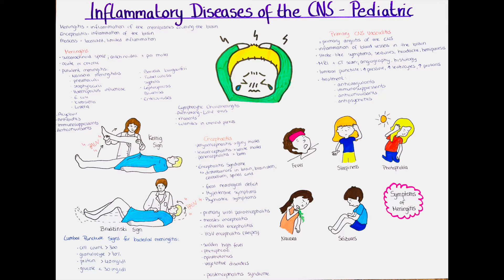Non-bacterial meningitis is caused by viruses such as the Flaviviridae family causing tick-borne encephalitis, herpesvirus, enterovirus, mumps virus, or fungi such as Cryptococcus neoformans. Usually pathogens gain entry via the respiratory tract or bloodstream and pass through the blood-brain barrier into the brain. In the case of cytomegalovirus, enteroviruses or Epstein-Barr virus, they usually reach the brain through the bloodstream.